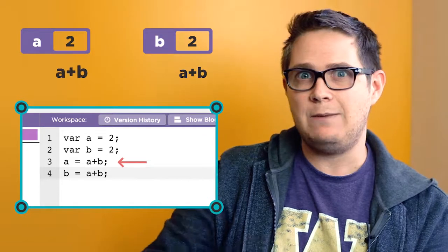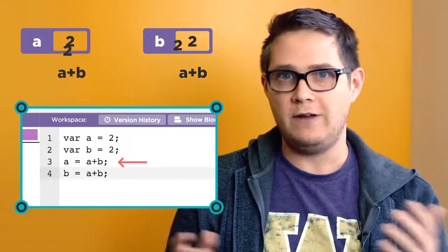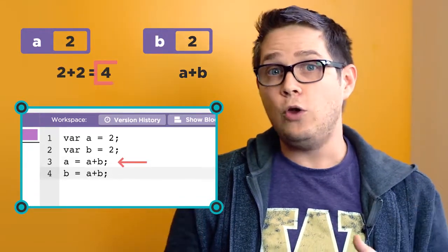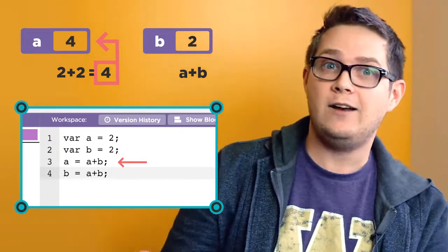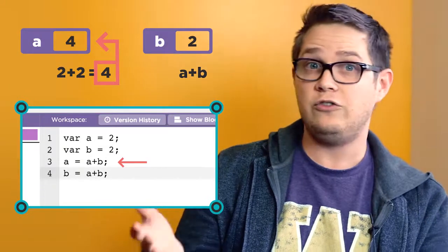When A gets A plus B, this will take the current values of A and B and add them together. The result of the equation is stored in the value of A, so as soon as this line of code is run, the value of A has changed to 4.